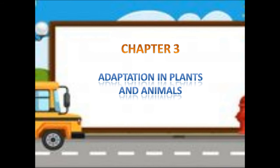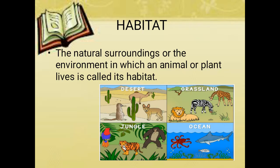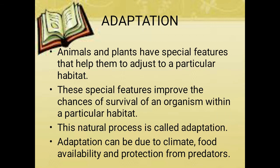So what is the topic we are discussing about? We are discussing about adaptation in plants and animals. We saw about habitat. What is habitat? The place in which the animals and plants are living is known as habitat. Adaptation is the special feature of a plant or animal. With the help of that feature, it will adapt to its surroundings — that feature is called adaptation. So to what circumstances, what situations, do the animals and plants have to adapt?